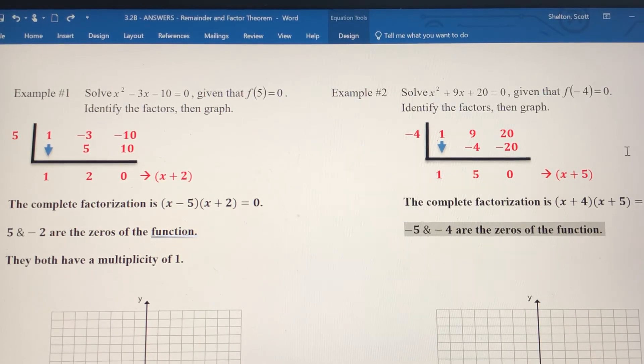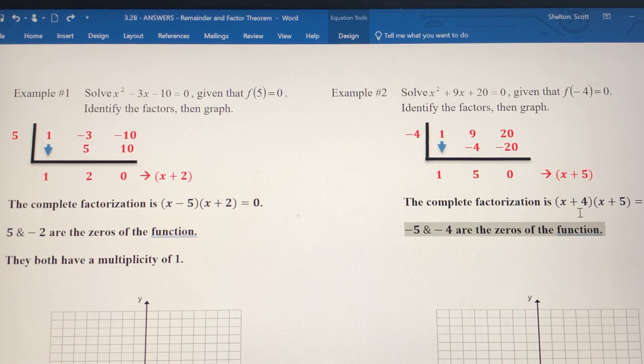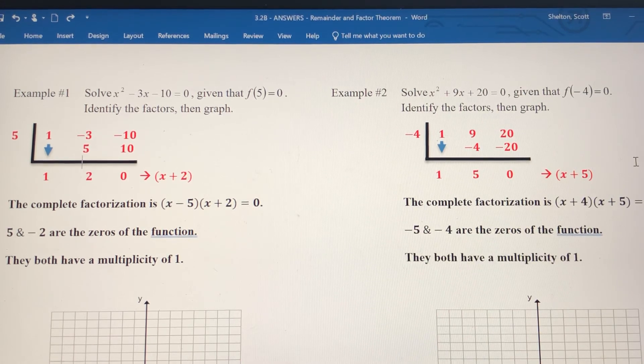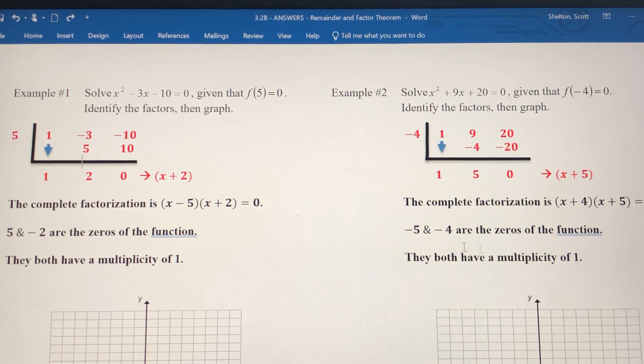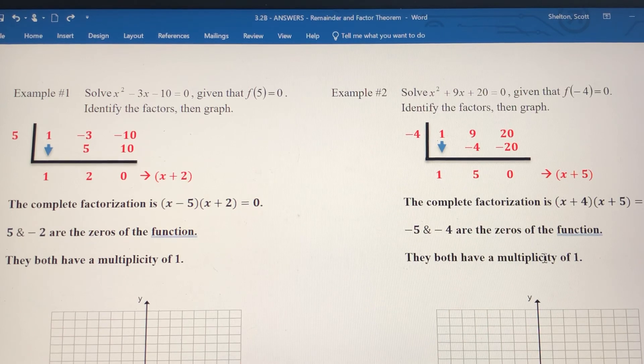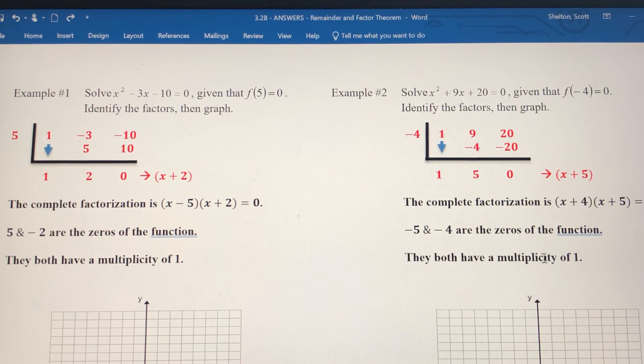That means negative 4 and negative 5 are the zeros of the function. Notice each of these factors only occur one time, so they have a multiplicity of 1. Again, you've got the zeros, you have their multiplicities, and you can use the other things we learned when we were graphing polynomials to help you graph this.